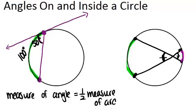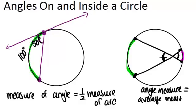And the answer is, the angle is always the average measure of the arc. So angle measure equals average measure of arcs.